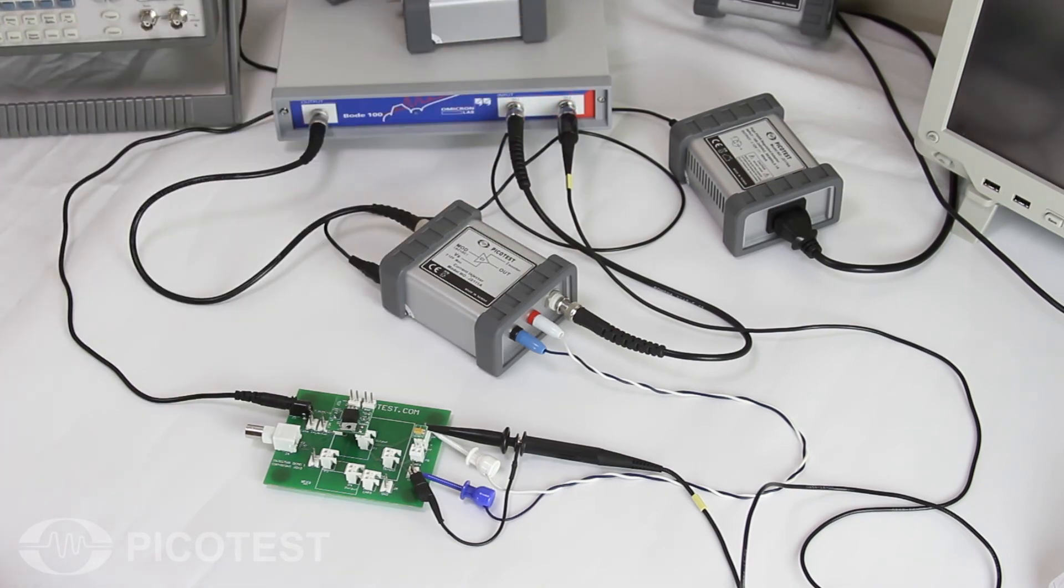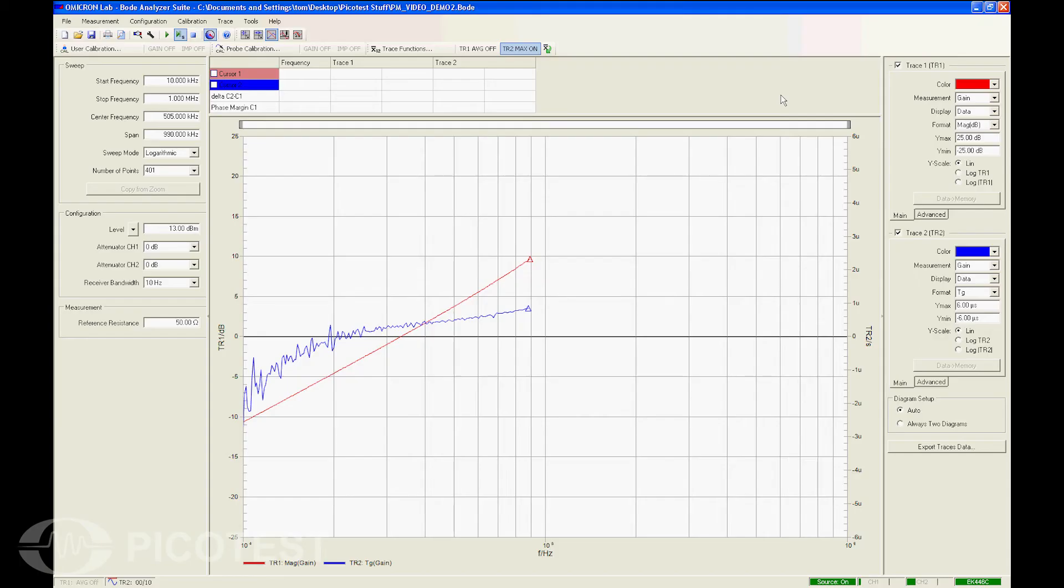This gives us our voltage over current impedance response. In this plot, the red trace is the measure of the output impedance of the regulator circuit in dB. The blue trace is the group delay of the impedance, which is the derivative of the phase between the voltage and current.